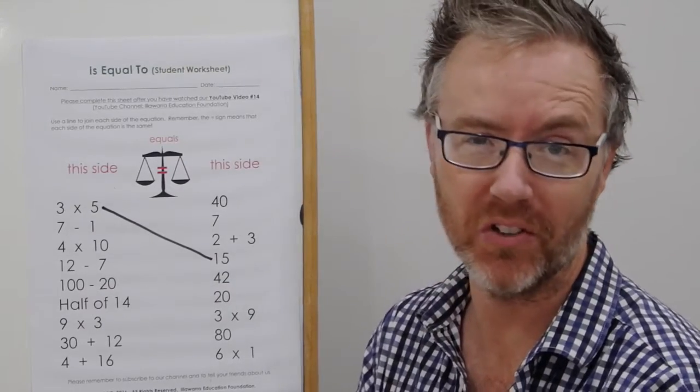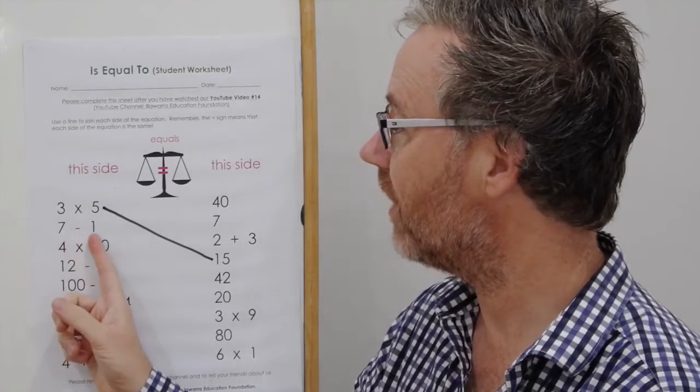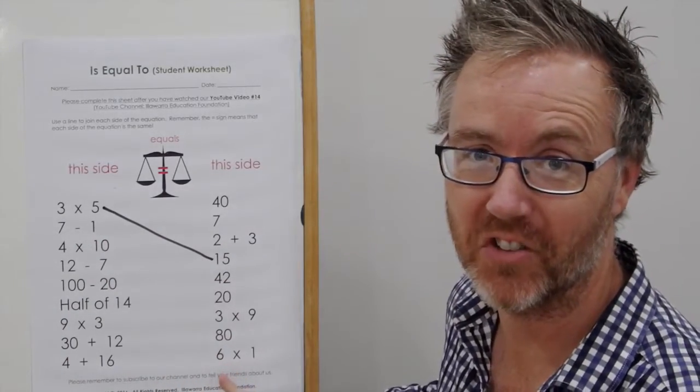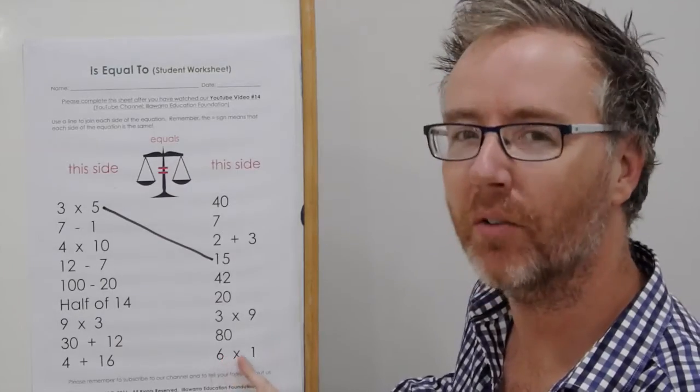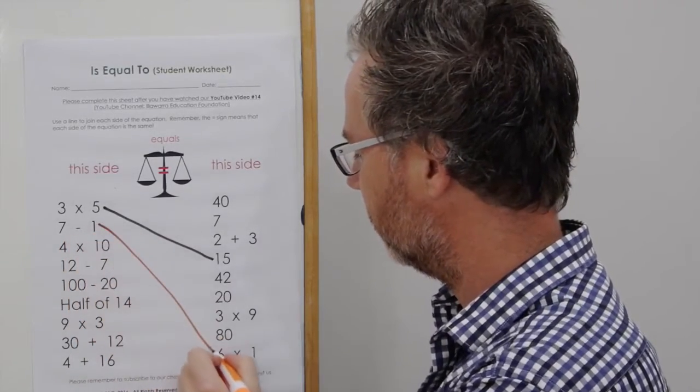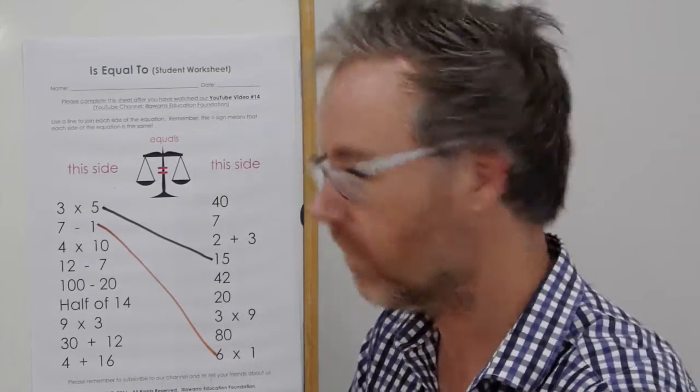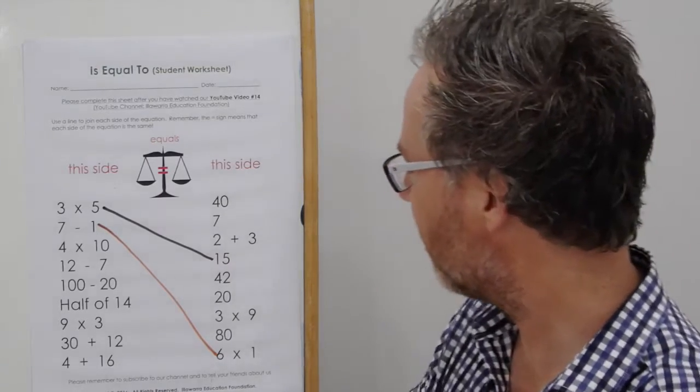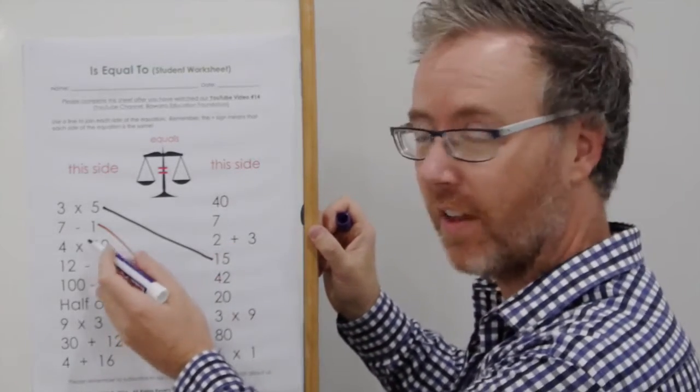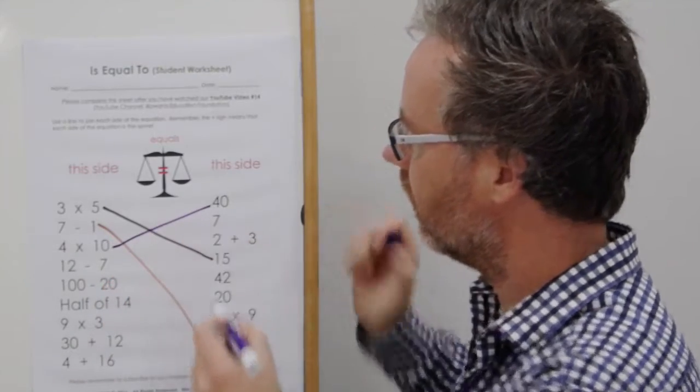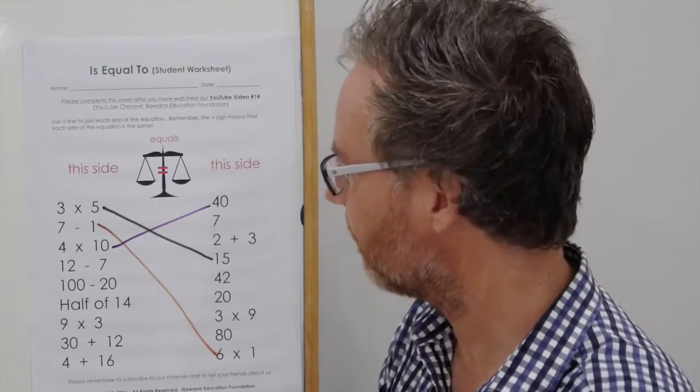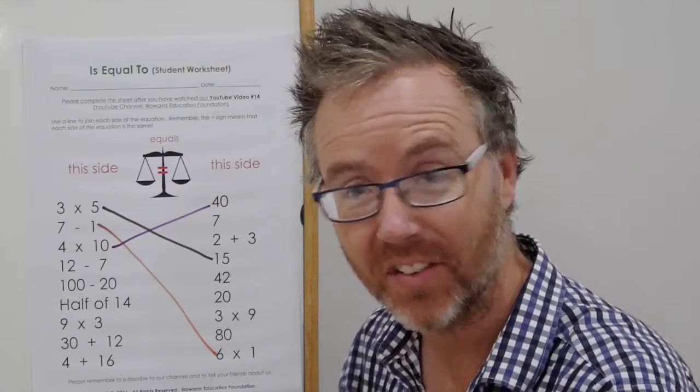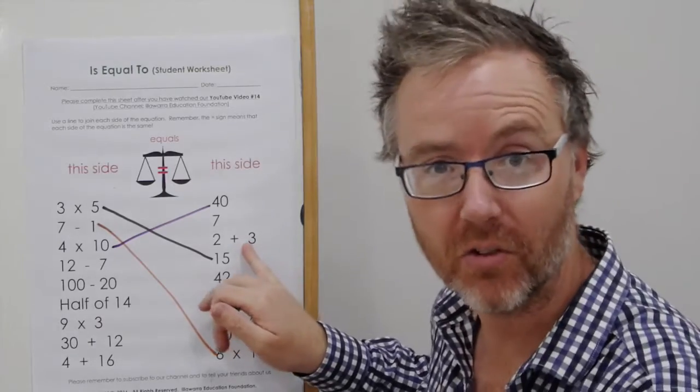I'm going to be changing colours so that you hopefully won't get too confused. 7 take away 1. Answer. 6. Now, I haven't written the straight answer 6. I've put in 6 times 1, which is 6. Next one. 4 times 10. Answer. 40. See if you can find that on your sheet. Next one. 12 take away 7. Answer. 5. And 2 plus 3 is equal to 5.